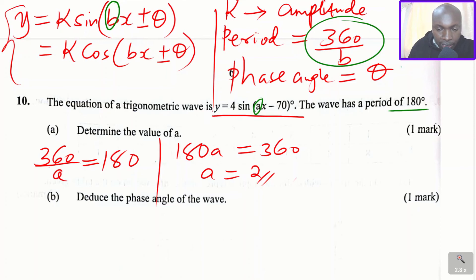We don't take the negative angle. So we don't take that as negative 70. The phase angle will be simply positive 70. That is very important to note, that we don't consider the negative, but we take the phase angle to be positive. So that is how we're supposed to solve that question. Thank you.